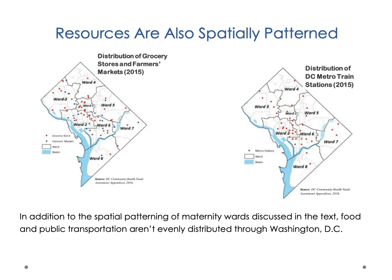If we look at Ward 8, which has one of the highest infant mortality rates, there is only one grocery store and one farmer's market in the entire ward. Comparing this to Ward 3, which has a similar population size, Ward 3 has nine grocery stores — nine times as many. People in Ward 3 also have multiple farmer's markets — at least four by one count — as opposed to one. So there are significant differences in the spatial experience of place in terms of access to food.